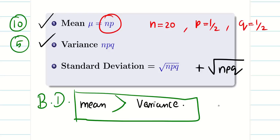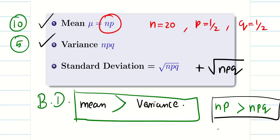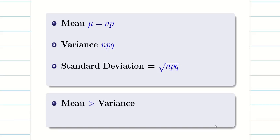Students ask when mean equals variance. We say n·p > n·p·q. Equality only occurs when p equals 0, which makes both sides 0. But p = 0 means the success rate is zero — nobody would gamble knowing they will lose 100% of the time. So that case is trivially useless. Therefore, we always say mean is greater than variance in binomial distribution.